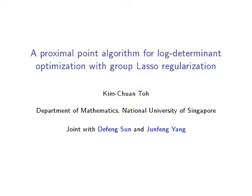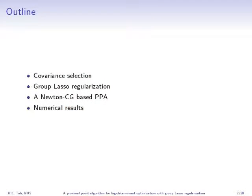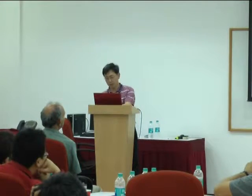I would like to thank the organizers for inviting me to give this talk. This work is joint work with my colleague Feng Sun at the National University of Singapore and Dr. Yang from Nanjing University. I will first briefly describe the covariance selection problem, then describe the problem with group lasso regularization, and a big part of the talk is on describing a Newton's CG-based proximal point algorithm to solve the problems, followed by numerical results.